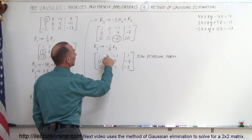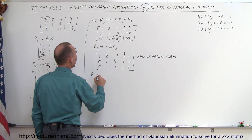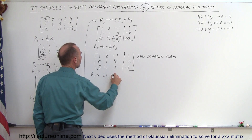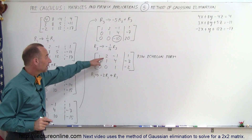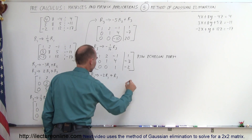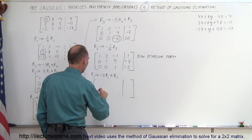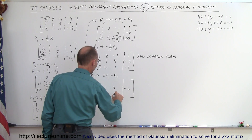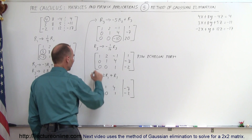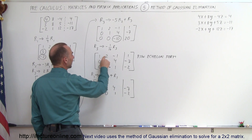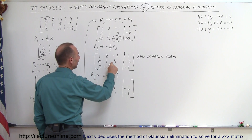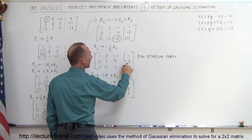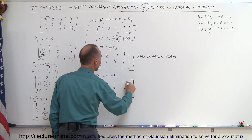To eliminate the 2 in row 1, I take row 1 and replace it by negative 2 times R2 added to row 1. Row 2 stays: 0, 1, 4, negative 7. Row 3 stays: 0, 0, 1, negative 2. For row 1: the first two entries remain 1 and 0. Negative 2 times 4 is negative 8, added to 1 gives negative 9. Negative 2 times negative 7 is positive 14, added to 1 gives positive 15.